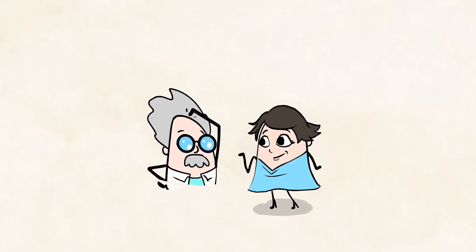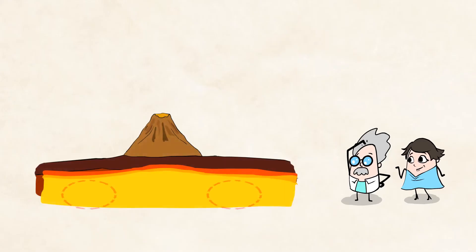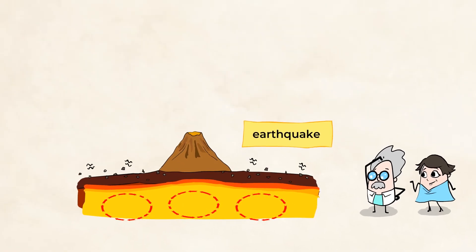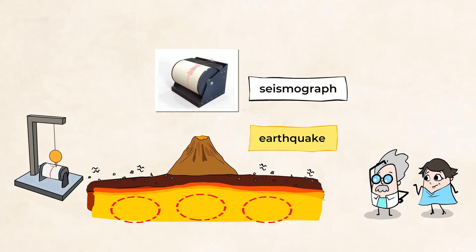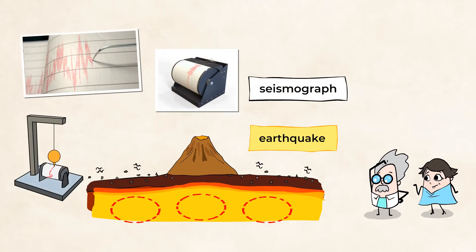Scientists have other tools that can help predict when a volcano might erupt. When magma moves underground, the land shakes, causing a type of earthquake. A special instrument called a seismograph can detect this shaking and warn scientists that magma is shifting underground. All of these tools are used by scientists to make predictions about when a volcano will erupt. This critical information can save lives and help us.